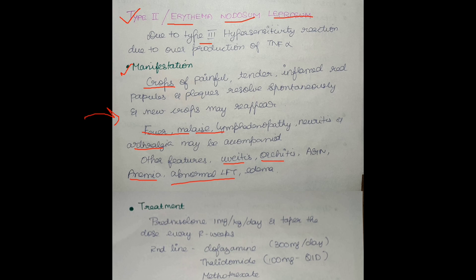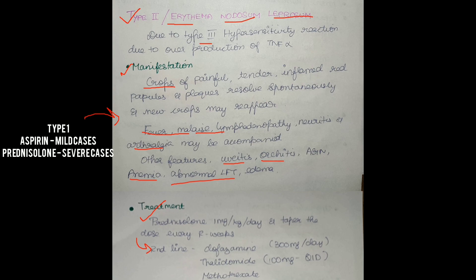For treatment of Type 2 reaction, prednisolone is started at 1 mg/kg/day. If the patient is not responding to this, we can add clofazimine or thalidomide. For Type 1 reaction, treatment includes aspirin, and in severe cases 40–80 mg of prednisolone can be given.